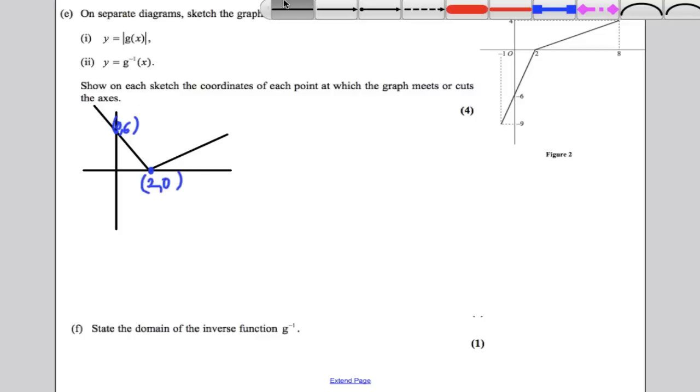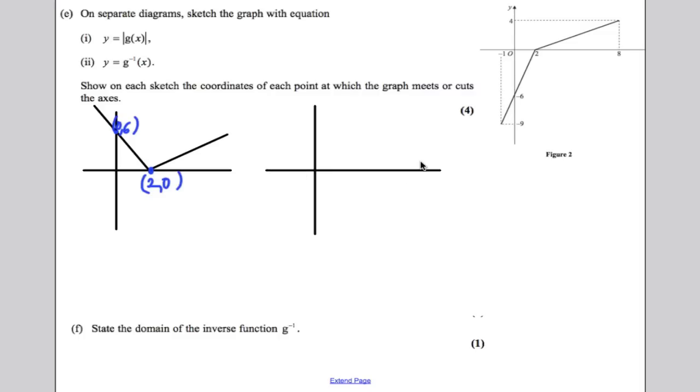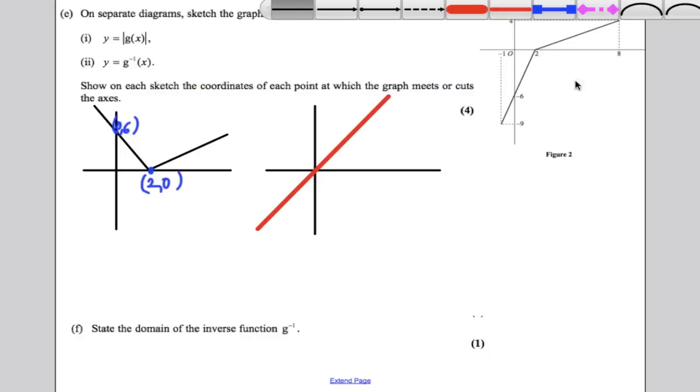Now, g inverse. g inverse is a reflection in the line y is x. It's going to be a reflection in that line. So let's draw the original graph. The original graph looks something like this. That's the original g. So we could just reflect that.